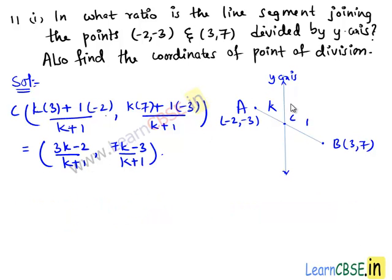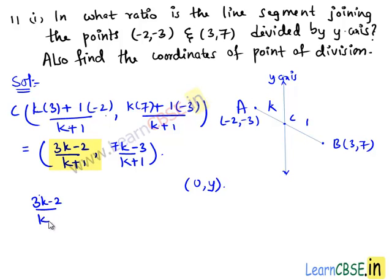But this point lies on the y-axis, which means its x-coordinate must be 0, since any point lying on the y-axis is of the form (0, y). Equating the x-coordinate to 0, we get (3k − 2)/(k+1) = 0, which implies 3k − 2 = 0, that is k = 2/3.